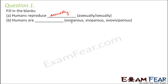Oviparous means animals which lay eggs. Viviparous means animals which directly give birth to young ones. Ovo-viviparous means animals which can either lay eggs or give birth to young ones. It is obviously viviparous because human beings don't lay eggs.